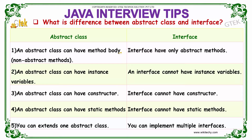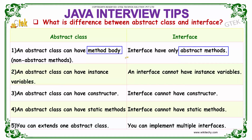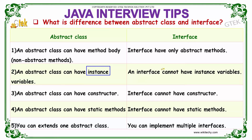What is the difference between abstract class and interface? An abstract class can have a method body, whereas your interface has only abstract methods. An abstract class can have an instance variable, whereas your interface cannot have instance variables.